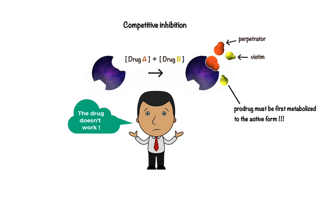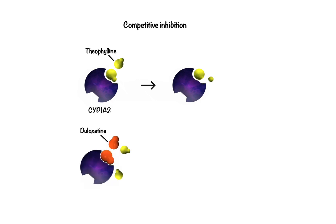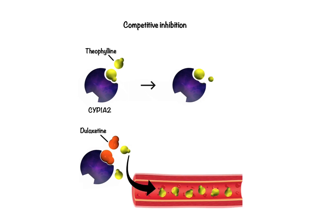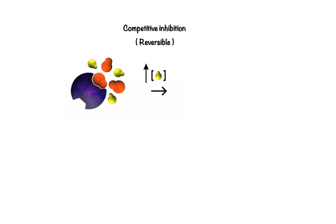In an example illustrating this scenario, theophylline, which is a weak CYP1A2 substrate, is largely metabolized by CYP1A2 by binding to its active site. If that active site is occupied by a stronger affinity substrate, such as duloxetine, breakdown of theophylline will be reduced, leading to increased plasma levels and possibly side effects such as nausea and vomiting. To minimize competitive inhibition, two competing substrates should be administered with as much time apart as possible. Because the competitive inhibition mechanism is sensitive to substrate concentrations, it is considered reversible. So if the concentrations of the weaker affinity substrate are substantially greater than those of the stronger affinity substrate, the weaker one can displace the stronger one and also prevent it from accessing the enzyme.